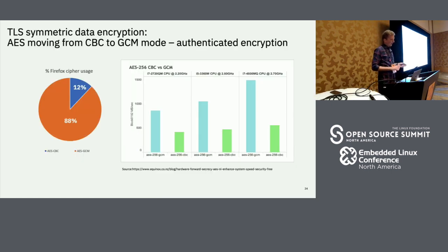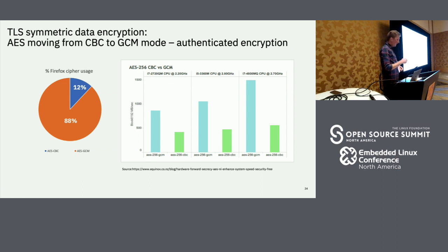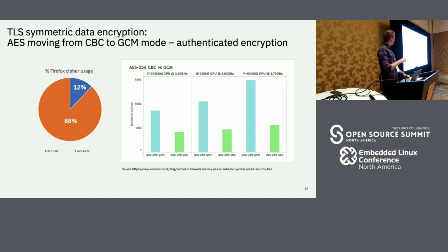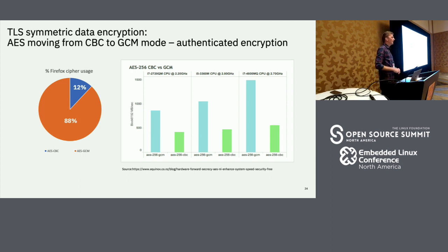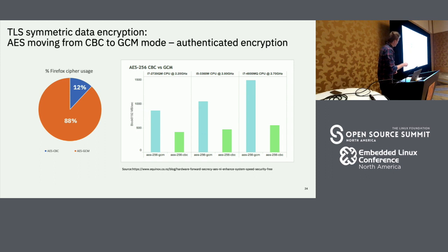TLS 1.3 enforces authenticated encryption, meaning all cipher suites using AES-CBC mode are moving to GCM. Data from Firefox shows that already around 88% of all websites are using AES-GCM mode. Different vendors have noticed that GCM is the way to go and have made hardware improvements in that direction. For example, a comparison of three Intel processors shows GCM throughput significantly better than CBC — in some cases up to three times better performance.